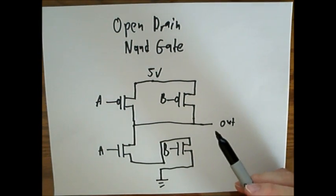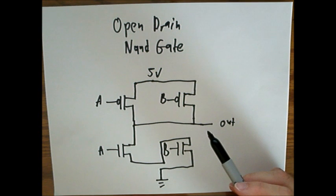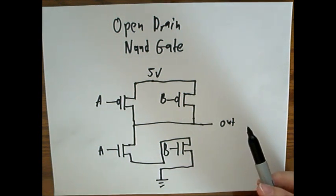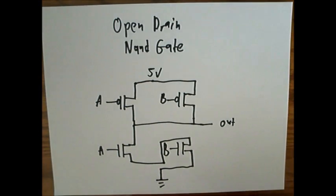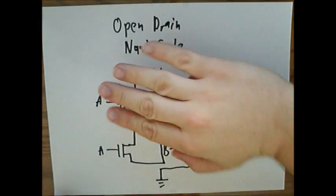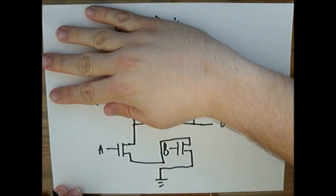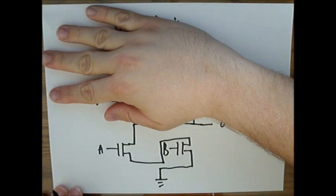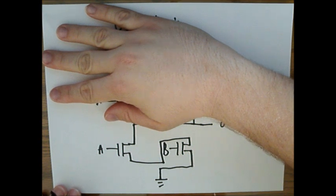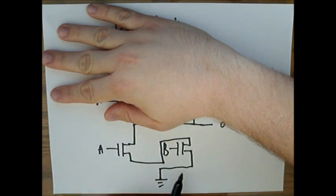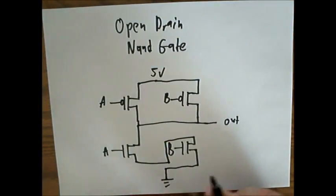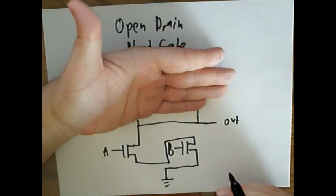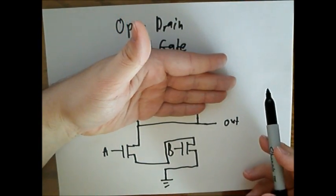So here's what a NAND gate looks like. However, an open drain NAND gate is practically like this, where there is no P-channel transistors, only the N-channel transistors, meaning that this gate — the open drain NAND gate — does not have any connection to power.